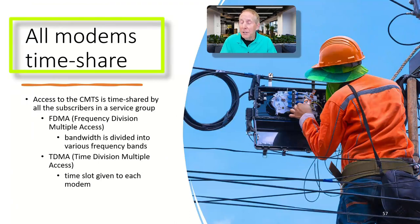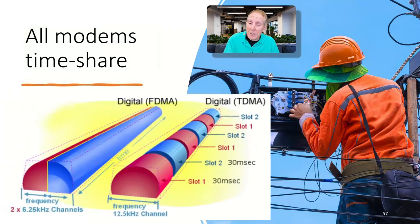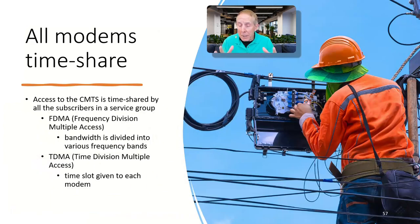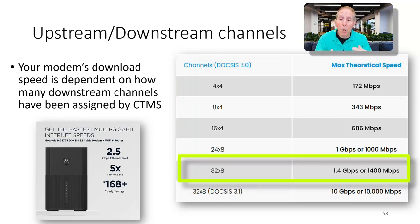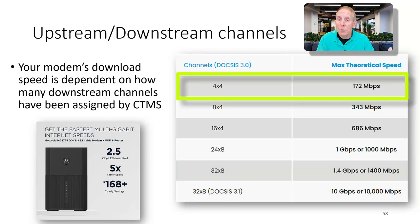All modems timeshare. Nobody on a cable system has dedicated access to the network. You all share the resources. They use things like frequency division multiple access and time division multiple access. Depending on how the operator provides a shared system, your cable modem shares the access to the network with other modems. The speed that you get for downloads and uploads is based on the plan that you purchase. When you purchase a plan, they add more channels. They begin to channel bond to give you more speed. If you pay for a higher plan, you're going to get more channels bonded to give you those higher download speeds. If you get the most basic plan, you're going to get only one or two channels for your download.